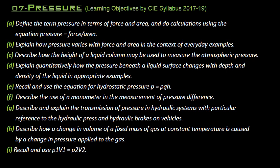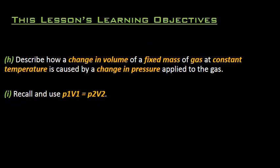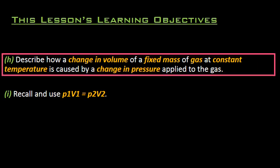As we have been discussing up till now, there are some learning outcomes or learning objectives given by CIE. So today we will be doing the last two learning outcomes, which are H and I. The first one we'll be looking at is learning objective H: describe how a change in volume of a fixed mass of gas at constant temperature is caused by a change in pressure.